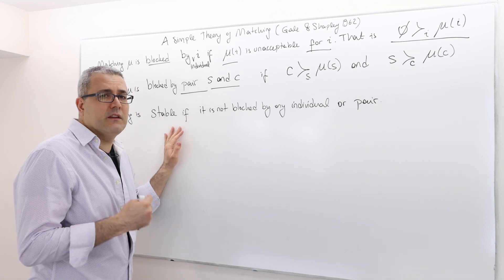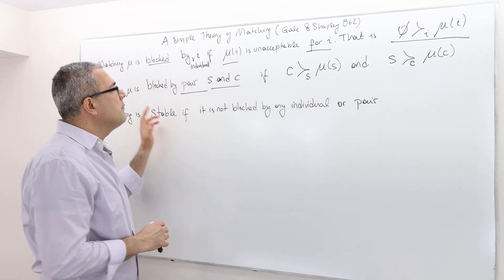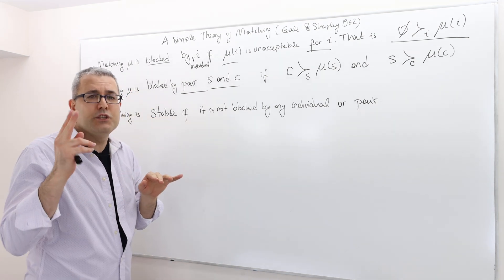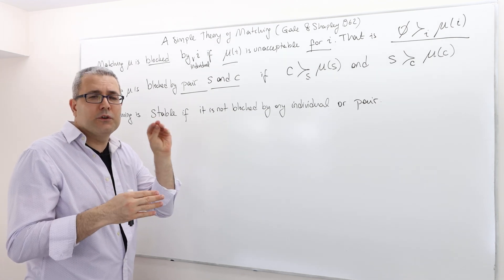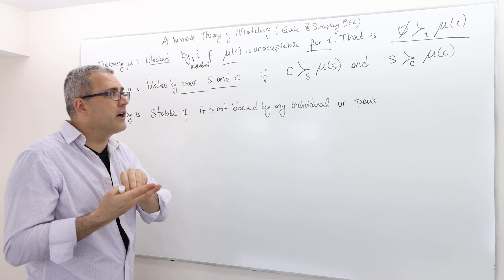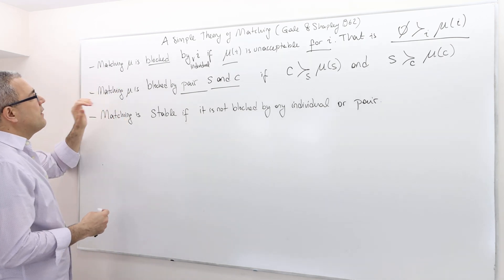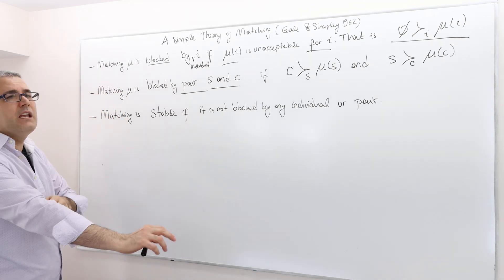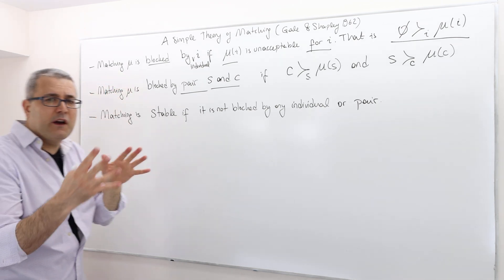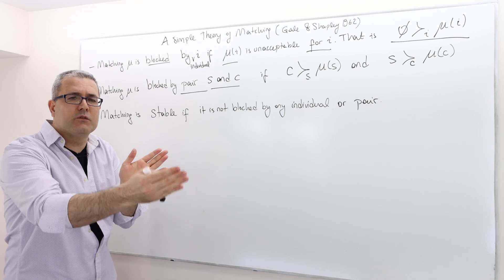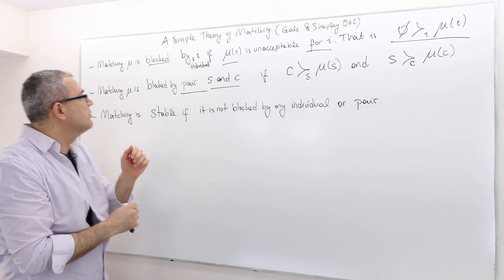Before I give you that description or definition, let me define two things: blocked by an individual and blocked by a pair. A matching mu, remember mu is a function, matches each student to a college and each college to a student.